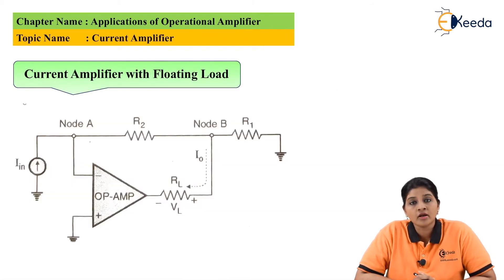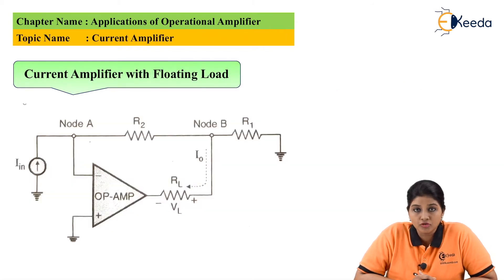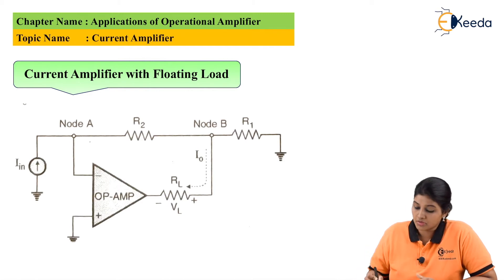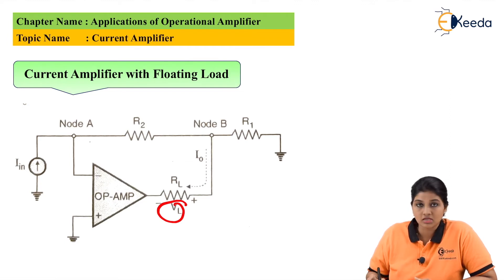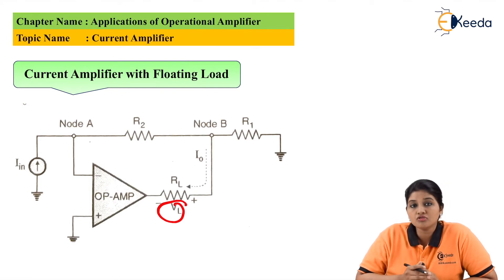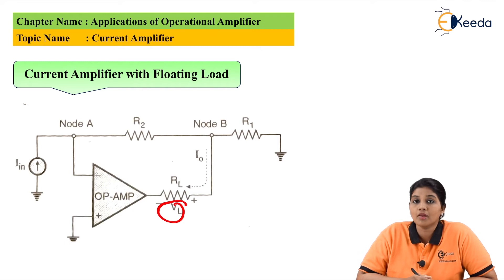This is the circuit of current amplifier with floating load. The name floating load is given because the output voltage VL is taken between the output terminal and node B. That means the load resistance RL is connected between the output terminal of the op-amp and node B. Now in order to make the analysis of the circuit, let's first apply KCL to node B.